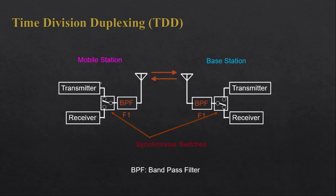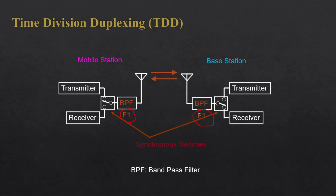Here you can see the diagram for time division duplexing. The mobile station uses the same frequency as the base station, and both need to synchronize for reception as well as transmission. When the mobile station wants to transmit, it sends at frequency F1. At the same time, the base station receives that signal. When the base station wants to transmit information, it again uses F1 but at a different time slot, and the mobile station receives it. Overall, synchronization between transmitter and receiver is essential.